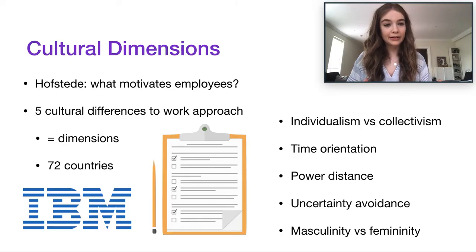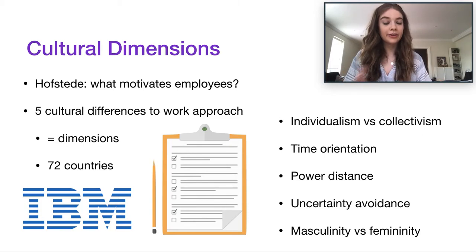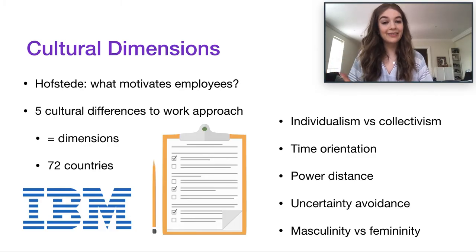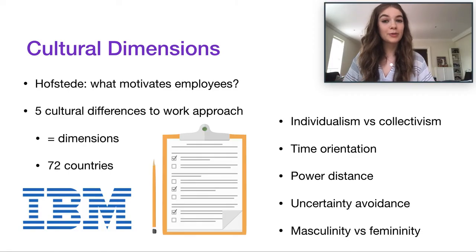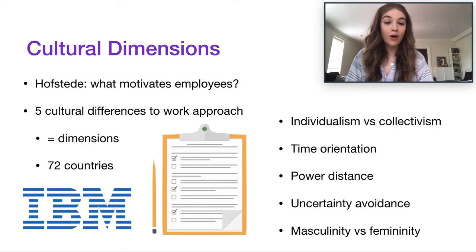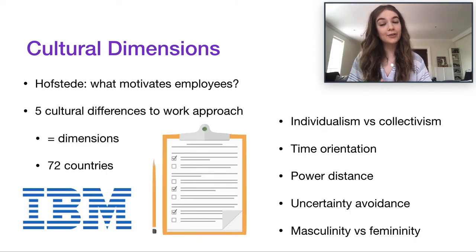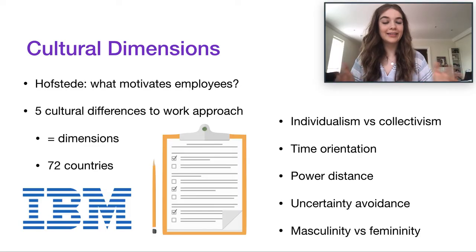Power distance is essentially how much power and status you're comfortable with being distributed within a company. If there's high power distance, you're okay with the boss being paid the most and there being people at quite low levels of pay below them — you don't mind an obvious hierarchy. Low power distance means you'd want total equality, with everyone on the same footing. Then there's uncertainty avoidance — how comfortable you are with ambiguous and unknown situations. High uncertainty avoidance means more strict rules, while low uncertainty avoidance is quite laissez-faire.